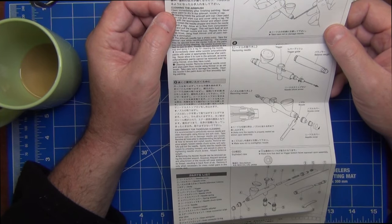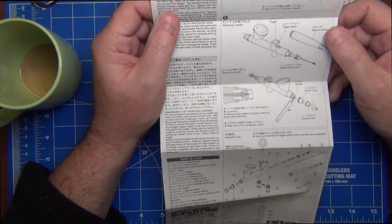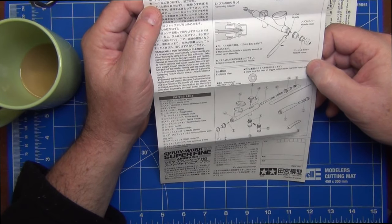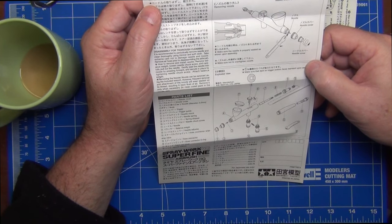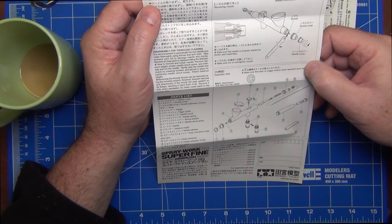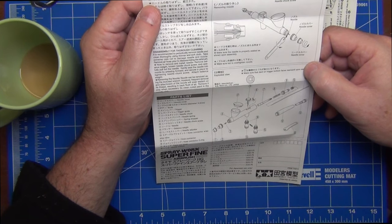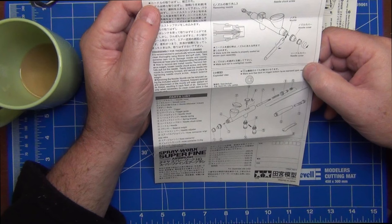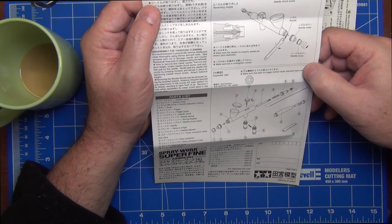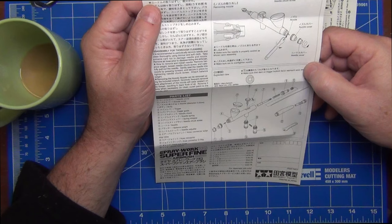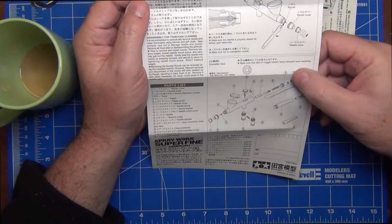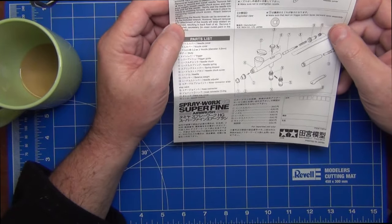It also makes another interesting comment about disassembly for thorough cleaning. It mentions you should periodically remove the needle and clean thoroughly using thinner and soft cloth. When it comes to the nozzle, it says it can be removed using the included wrench, however frequent removal and attachment of the nozzle will wear sealant on its thread resulting in back flush of air. Remove it only when necessary, in brackets, to clear cured paint in the nozzle, et cetera. So they're actually saying you should be a little bit cautious about dismantling your airbrush all the time.